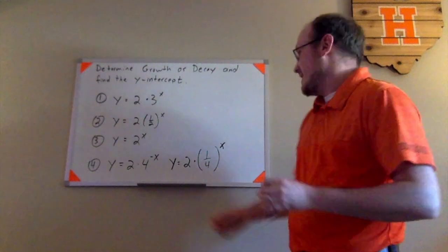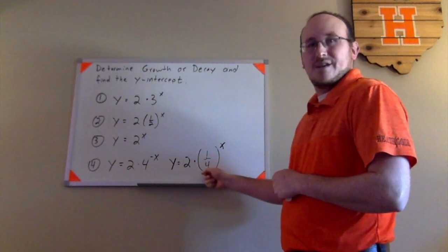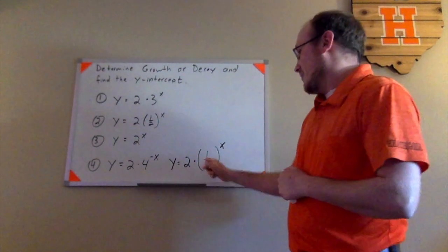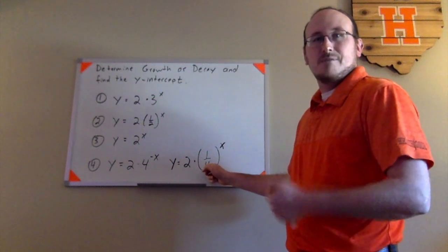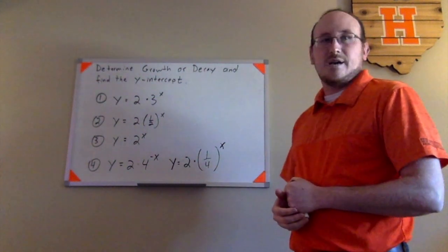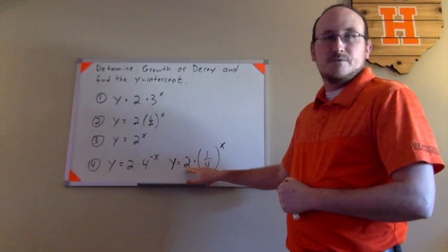And therefore making this exponential decay with, again, a y-intercept of 2. Hopefully that helps.